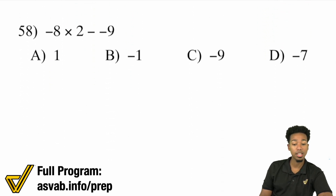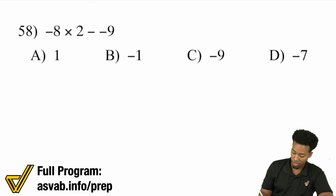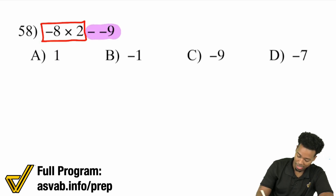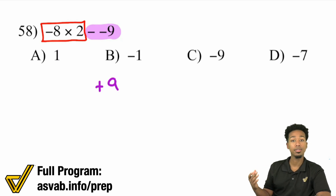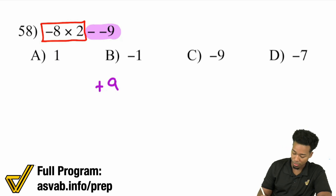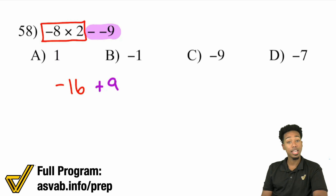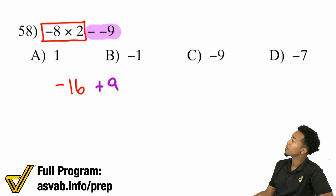Number 58: negative 8 times positive 2 minus negative 9. Two things right now: we're doing the multiplication first. Also, the minus negative 9 is going to end up becoming plus 9 — because when you subtract a negative, that's the same thing as adding a positive. So negative 8 times 2 — a negative times a positive is negative — that's going to be negative 16. 8 times 2 is 16. So what is negative 16 plus 9?